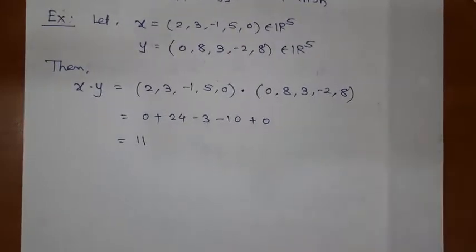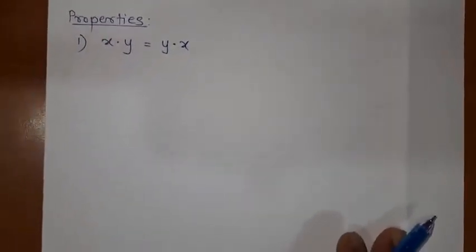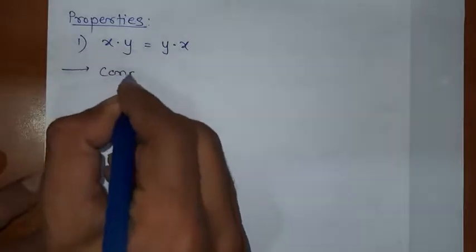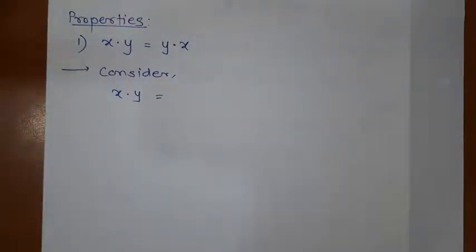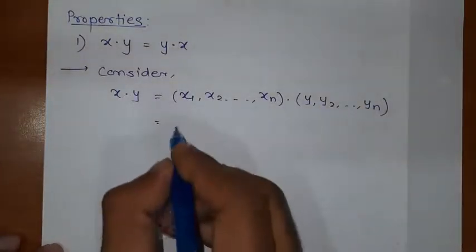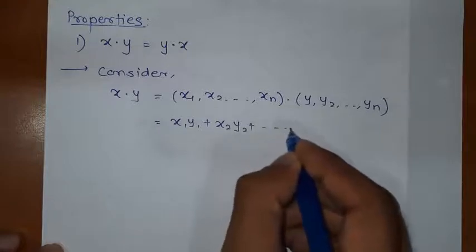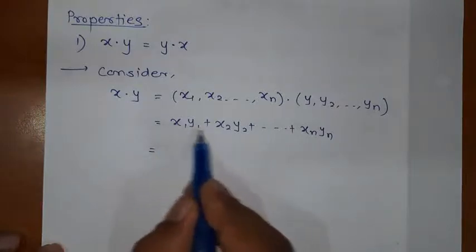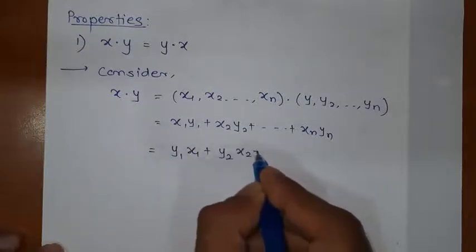Let us discuss some interesting properties of inner product. The first property is X dot Y is equal to Y dot X. We are going to prove this. I will start with the left-hand side and prove the right-hand side. When we take the inner product X dot Y, we have X1 into Y1 plus X2 into Y2, and the last element will be Xn into Yn. But 2 into 3 is nothing but 3 into 2 — you can commute. So Y1 into X1, Y2 into X2, and so on.